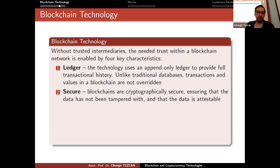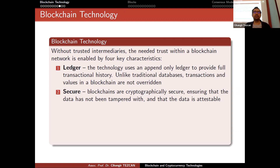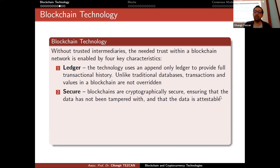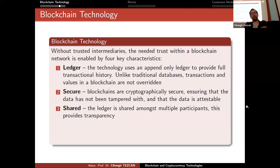The second characteristic is security. Blockchains are cryptographically secure, ensuring that the data has not been tampered with and that the data is attestable. When people hear 'cryptographically secure,' they think everything is encrypted, but the cryptography here serves two specific purposes: ensuring data integrity — provided by cryptographic hash functions — and attestability, meaning only the person who has authority or ownership of something can sign it and transfer ownership to somebody else, which is done by digital signatures.